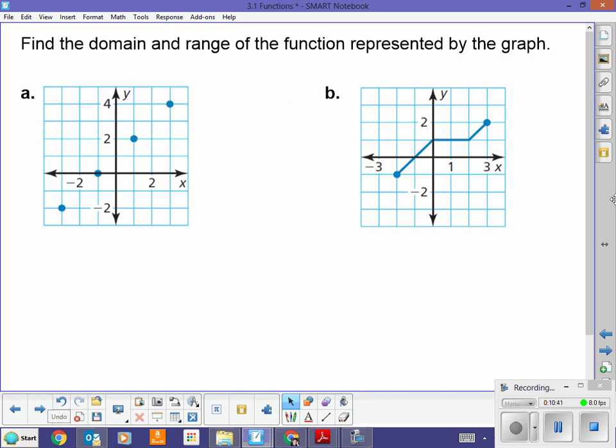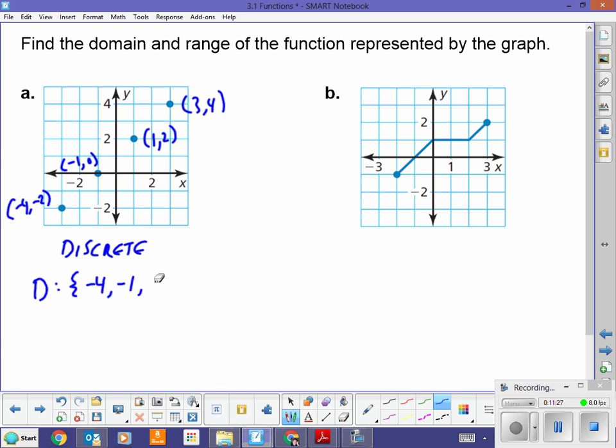Find the domain and range. This is really important. This is going to wrap up our session here, I think. We have what we call, these separate points here, we call these, we call this discrete. There's two different discretes and this is the one. Discrete points mean separate. Discrete means separate. So, the domain, let's look at these points here. This is negative four, negative two. This is negative one, zero. This is one, two. And this is three, four. Okay. So, these are discrete points. My domain is negative four, negative one, one, and three. My range is negative two, zero, two, and four.